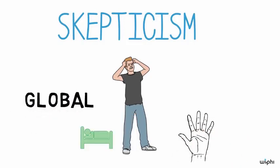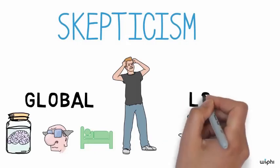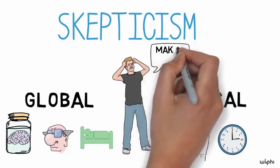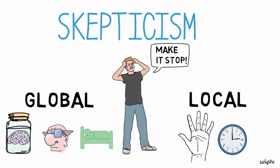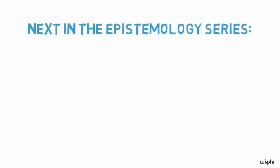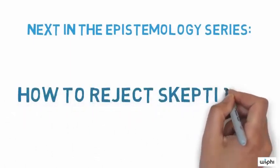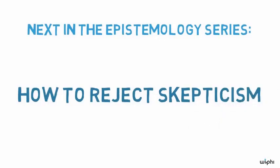Skepticism, whether it's global or local, is an ancient and difficult problem. Philosophers have proposed various solutions to this problem. The next two videos describe some of the main ways of answering the skeptic's challenges and defending the idea that knowledge is humanly possible.